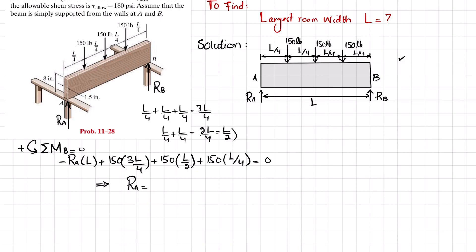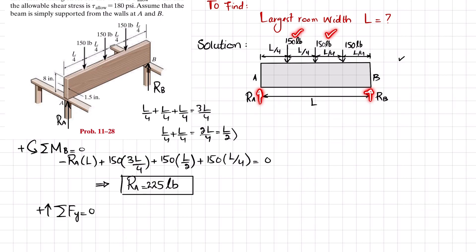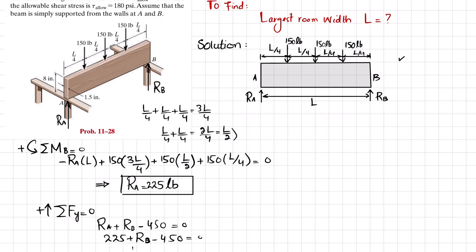Ra equals 225 pounds. We find Rb using another equilibrium condition: the sum of all forces in the y-direction must equal zero. We have Ra + Rb - 150 - 150 - 150 = 0, so Ra + Rb - 450 = 0. Substituting Ra = 225: 225 + Rb - 450 = 0, giving Rb = 225 pounds.